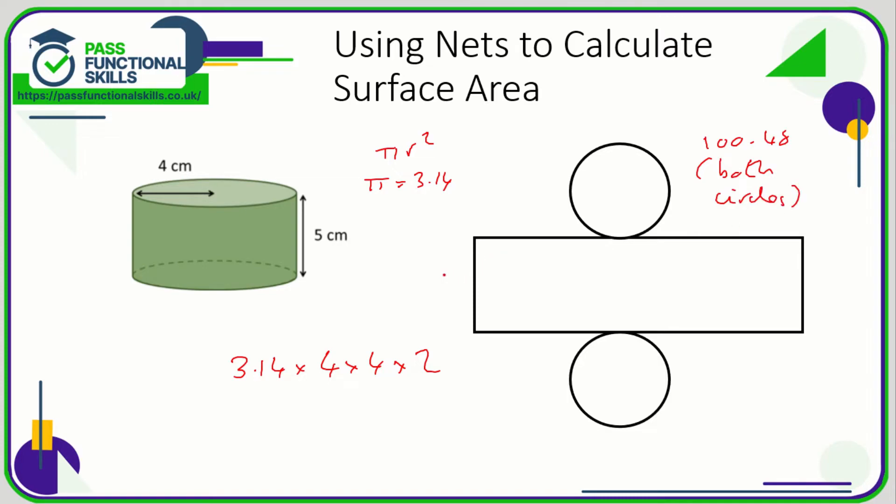We know it's five in height, but we don't know how long it is. The length of this rectangle is the circumference of the circle. The formula for the circumference is pi times the diameter, so 3.14. And the diameter, well if the radius is 4 then the diameter is going to be double that, so 8.